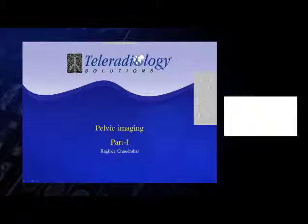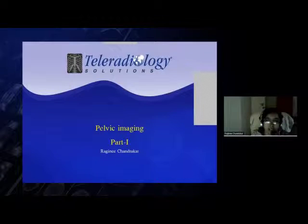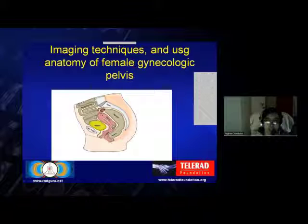Hello, good evening everyone. This is part one where we'll see amazing techniques and basic ultrasound anatomy of the female gynecologic pelvis. As seen in this line diagram, in the sagittal image we can identify the bladder anteriorly, the uterus posterior to the bladder, and posterior to the uterus the sigmoid and spine. The symphysis pubis is anterior. From cranial to caudal we see the body of the uterus, then cervix and vagina. On the adnexal side we can see the fallopian tubes and ovaries.